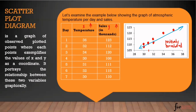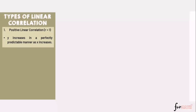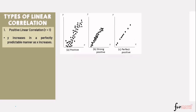We have different types of linear correlation. Number one: positive linear correlation — as y increases, x also increases. We have three levels: positive (points are scattered), strong positive (points are closer together), and perfect positive (forms a straight line).